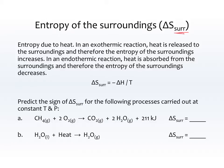In an exothermic reaction, heat is released to the surroundings, and therefore the entropy of the surroundings increases — if it's getting heat from the system, the surroundings are becoming more disordered. In an endothermic reaction, heat is absorbed from the surroundings, and therefore the entropy of the surroundings decreases. So as delta H is negative, the surroundings' entropy increases; as delta H is positive, the surroundings' entropy decreases.